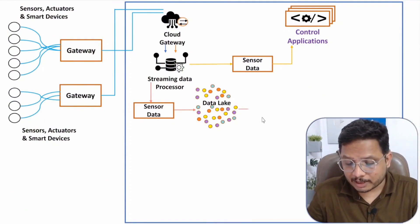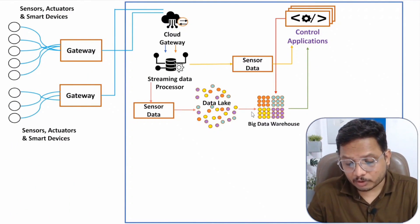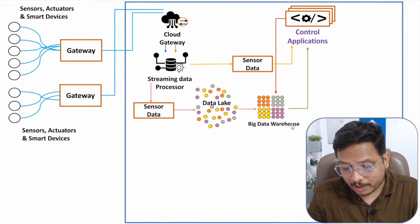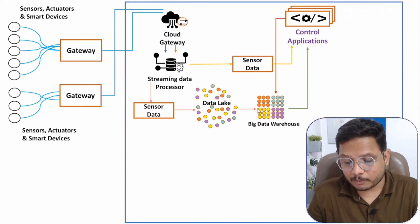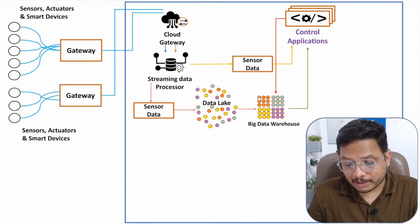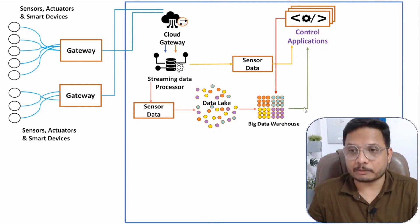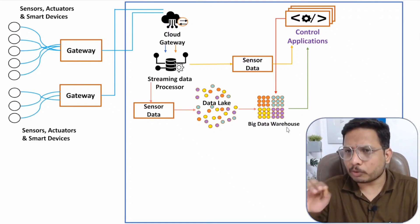The next block is the Big Data Warehouse, which takes input from the data lake. There is structured data storage in the Big Data Warehouse. Before storing data inside it, it performs data filtering and processing. After this, the data stored inside the Big Data Warehouse is structured, and it can provide data to control applications in a structured manner. Based on the commands given by the control application, this Big Data Warehouse will provide meaningful insights for the given application, playing a crucial role in making data accessible to control applications.